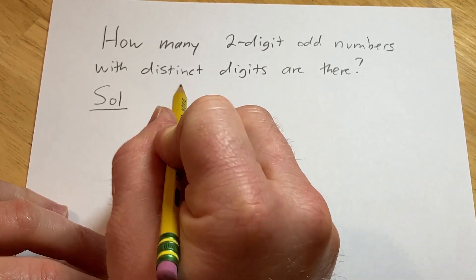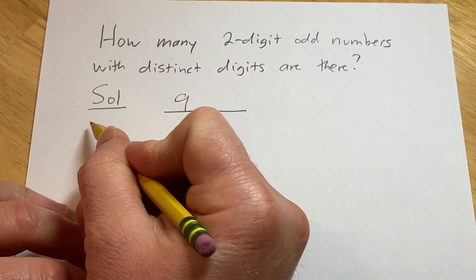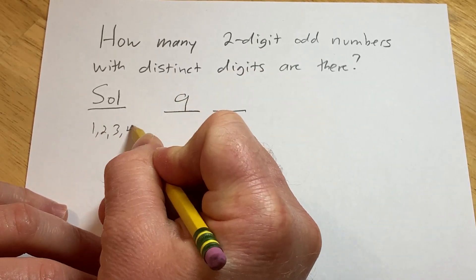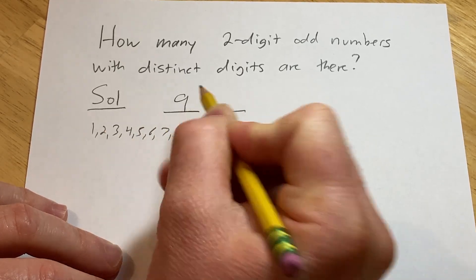There are nine ways to pick the first digit because you have choices of 1, 2, 3, 4, 5, 6, 7, 8, 9. So nine ways to pick the first digit.